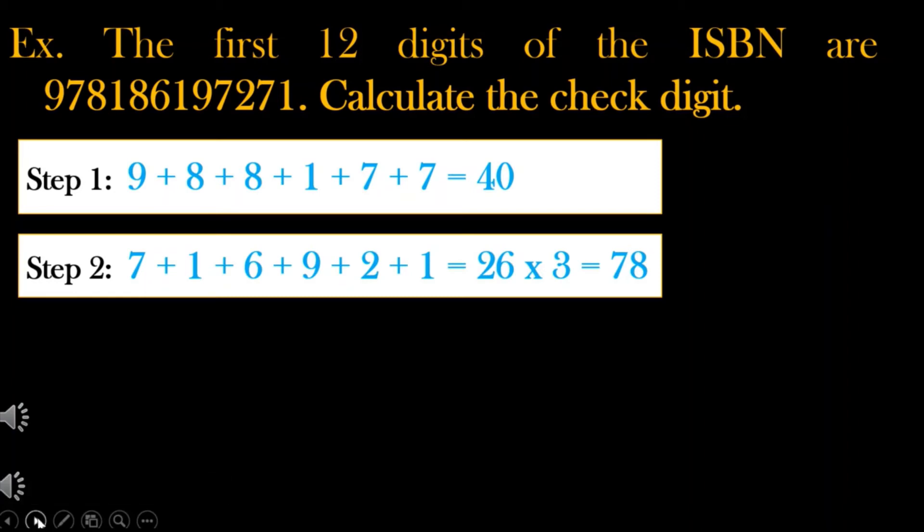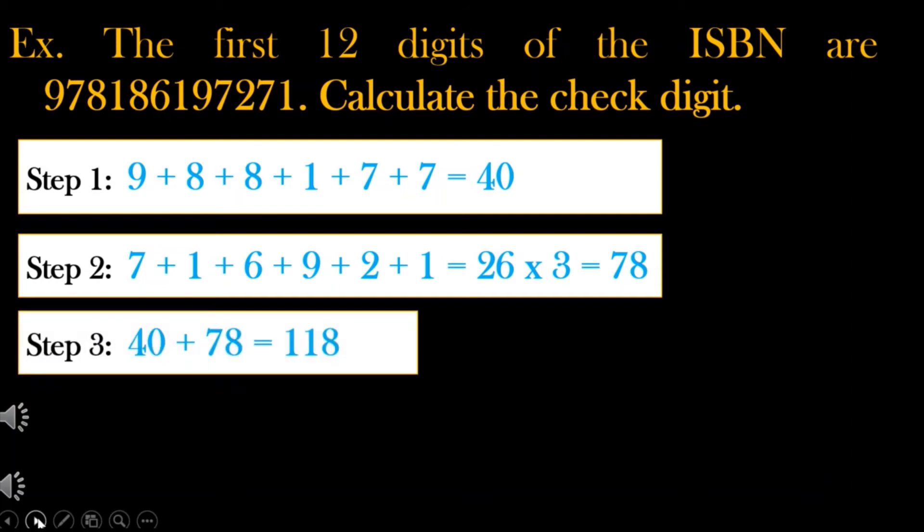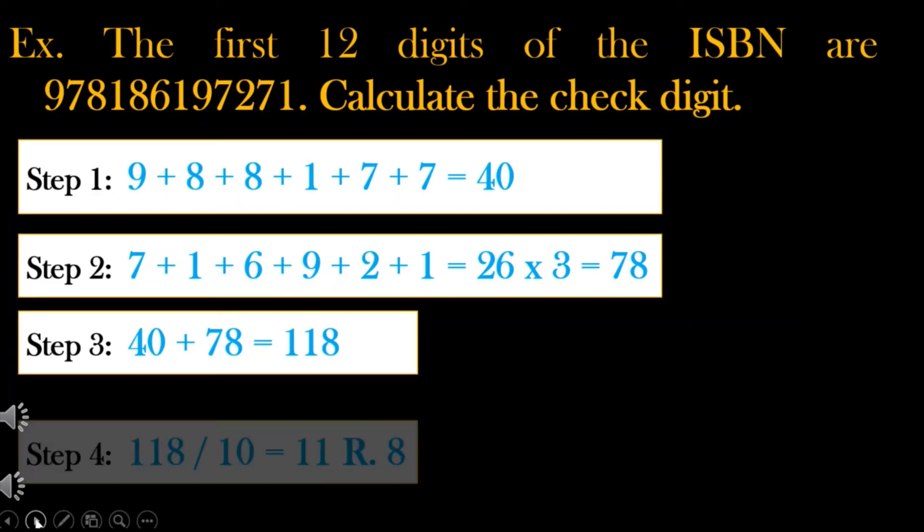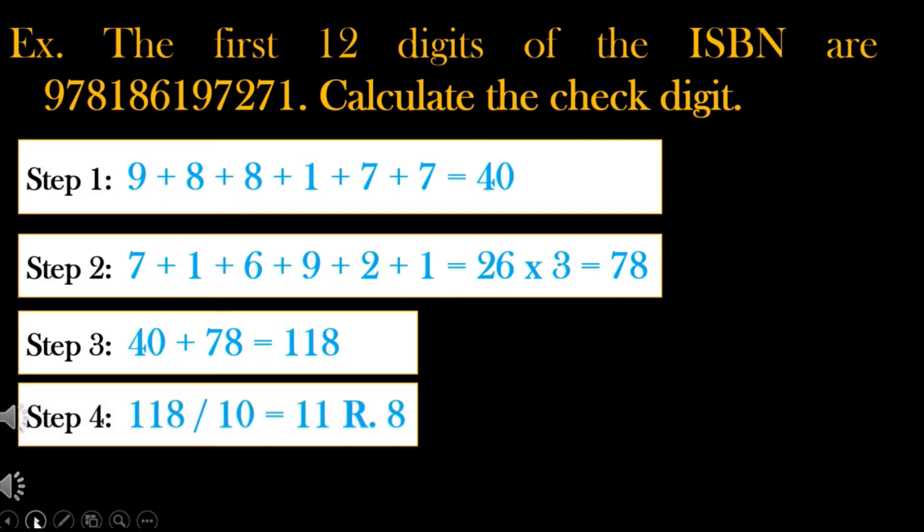Step 3: Add the results of Step 1 and Step 2. 40 plus 78 is equal to 118. Step 4: Divide the result by 10 and get the remainder. 118 divided by 10 is equal to 11 with a remainder of 8.